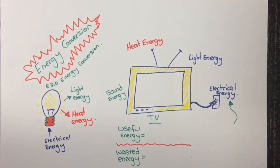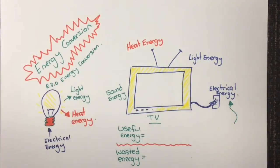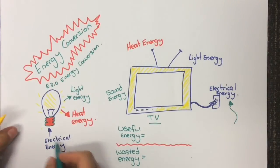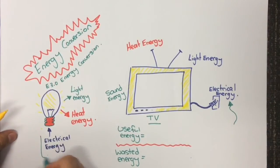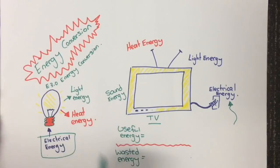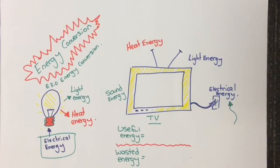Devices that use energy are all around us, and many use energy in different ways. The devices we are surrounded with often use one type of energy and change it into another to perform the function they were designed for. For example, a TV uses electrical energy and converts it into other energy forms such as sound and light.